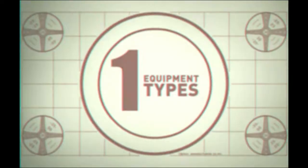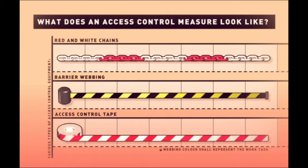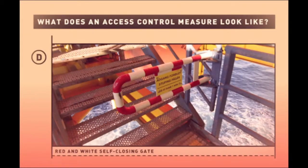There are various types of access control equipment which are suitable for different work tasks. Temporary access control measures often consist of red and white chains, barrier webbing or similar. An access control measure can also be an integrated part of the area design, such as a red and white self-closing gate.